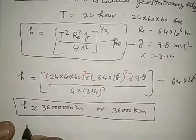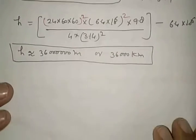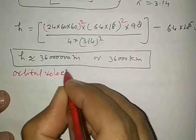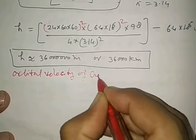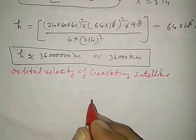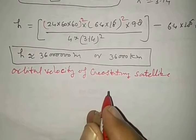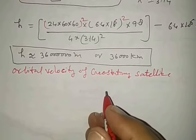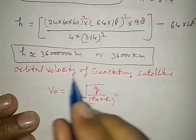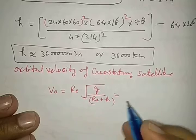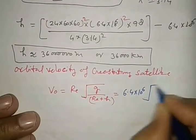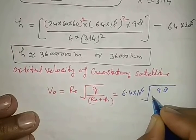Now we want to see what should be the orbital velocity of geostationary satellite. First of all, the orbital velocity formula is: V_0 = R_e × √[g/(R_e + h)]. Putting values: R_e is 6.4 × 10^6, g is 9.8, R_e + h...